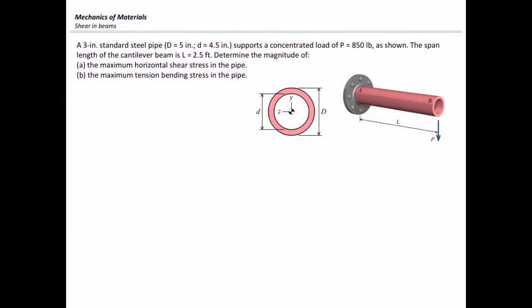In this problem we want to determine the maximum shear stress in this pipe and the maximum bending stress. The basic equation needed for shear stress is τ = VQ / (It), and the normal bending stress is calculated from σ = Mc / I. Let me determine these parameters one by one.